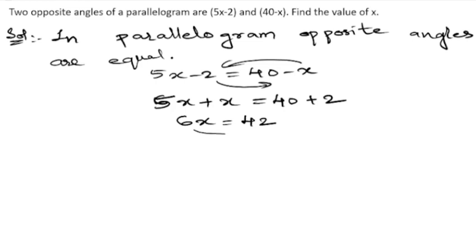6 goes down. x is equal to 42 by 6. 6 sevens are 42, so x is equal to 7.